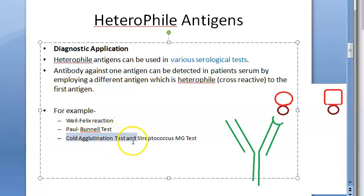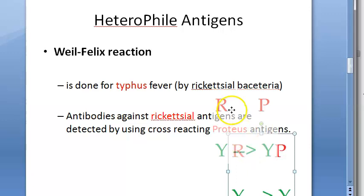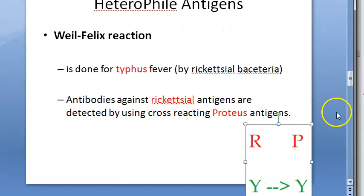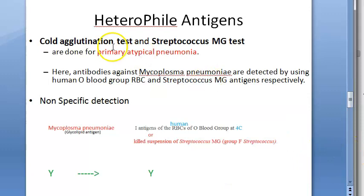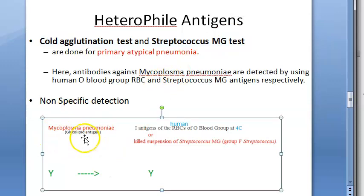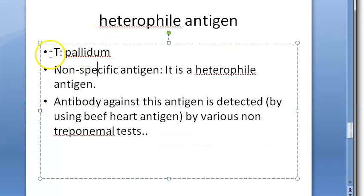In the Weil-Felix reaction, you detect Rickettsia in typhus fever using Proteus antigen. In the Paul-Bunnell test, to detect Epstein-Barr virus and infectious mononucleosis, you use sheep RBCs. In the cold agglutination test, to detect the glycolipid antigen of Mycoplasma pneumoniae, you use human RBCs at 4 degrees centigrade. In the Streptococcus MG test, you use a killed suspension of Streptococcus MG.